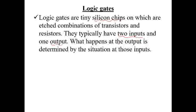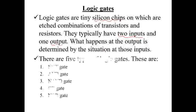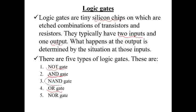We will see what happens to the output as determined by the situation of those inputs. We have five logic gates — actually, the fundamental ones are three: the NOT gate, the AND gate, and the OR gate. The NAND and NOR gates are the inverses of the AND and OR gates.